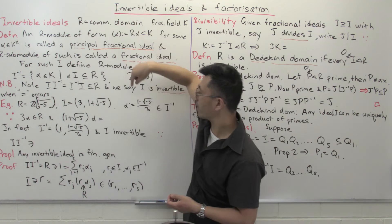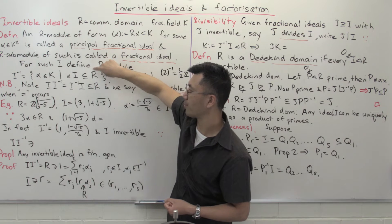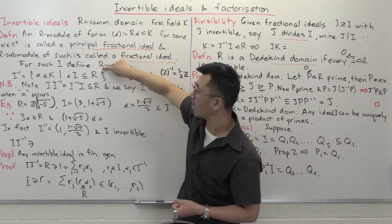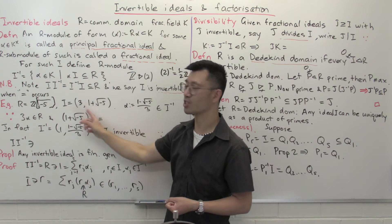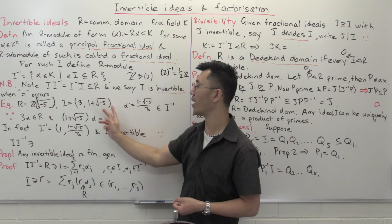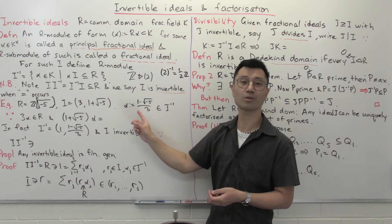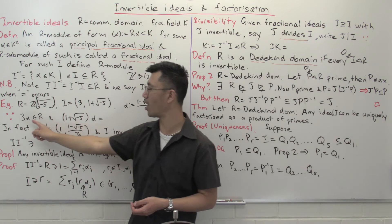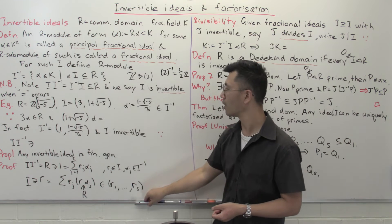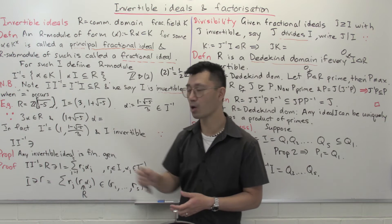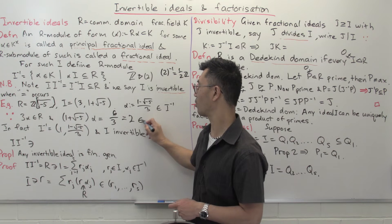This element is certainly not inside R — it's not an integer linear combination of 1 and the square root of minus 5. But I claim it's inside I-inverse. To check that, I need to verify that if I multiply this by anything inside I — generated by 3 and 1 plus √(-5) — I get something inside R. So I just need to show that 3 times this, and 1 plus √(-5) times this, are inside R. Multiplying alpha by 3 clears the denominator, giving 1 minus √(-5), which is clearly inside R. The more interesting case: multiplying 1 plus √(-5) by alpha gives the modulus squared divided by 3, which is (1+5)/3 = 6/3 = 2, which is also inside R.